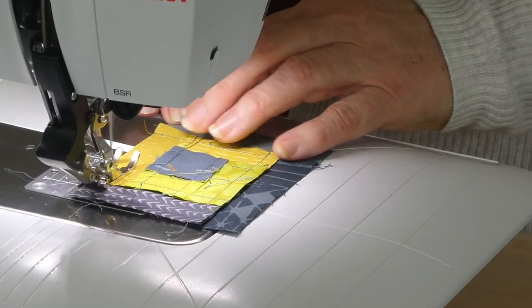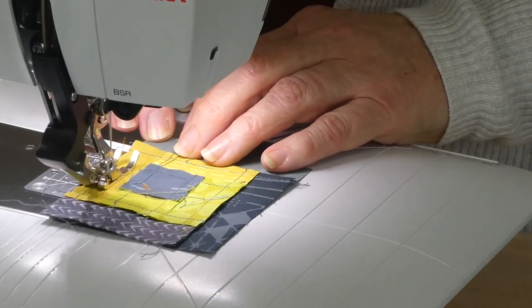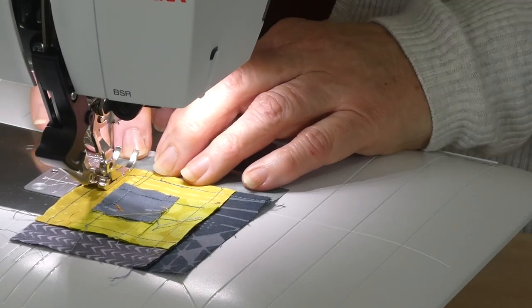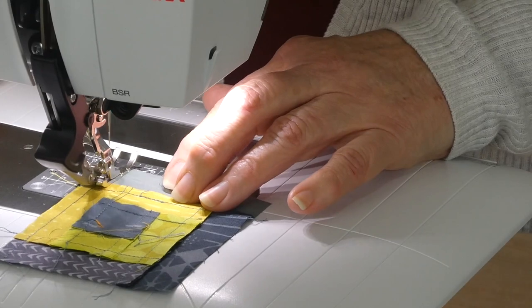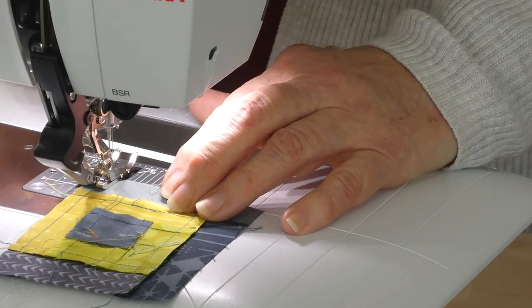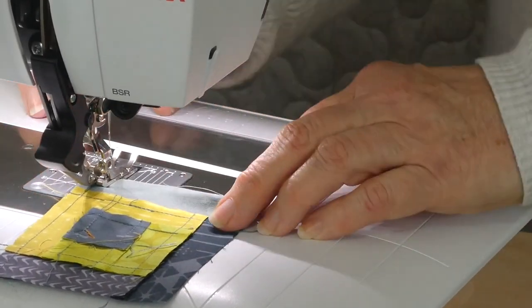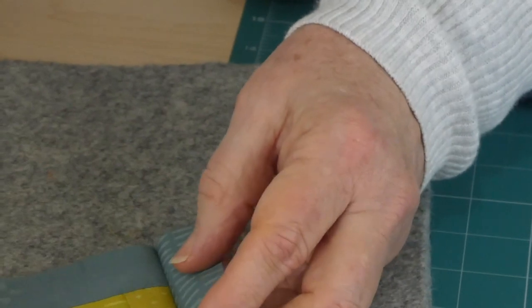So I'm just sewing on the last strip for my block. So that's looking pretty good. It's all together now. I'm just going to press that last seam.